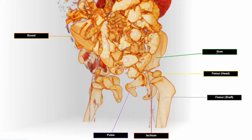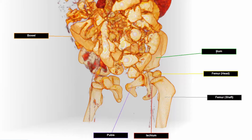The third pelvic bone, the ileum, is also labeled. The lumpy material in the boy's abdomen is contrasted bowel.